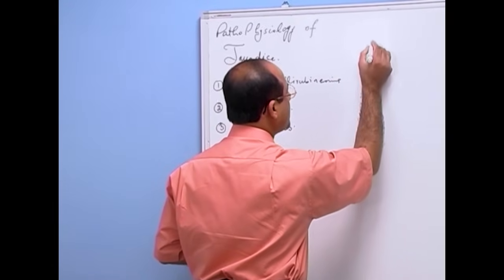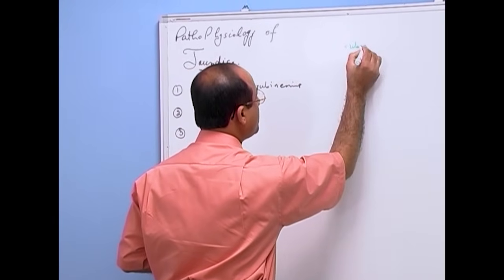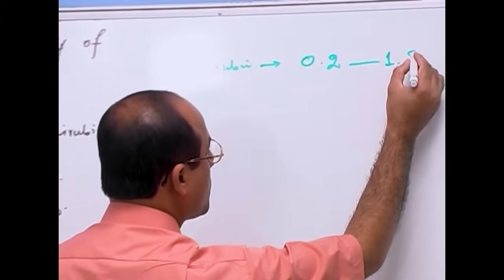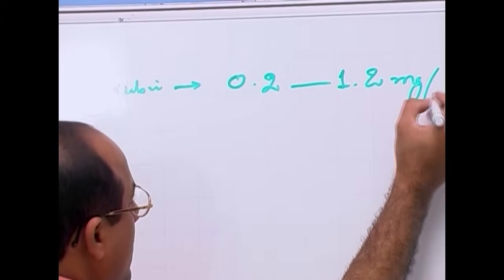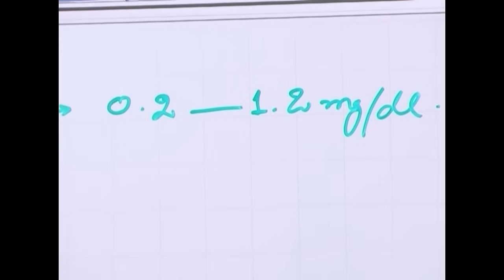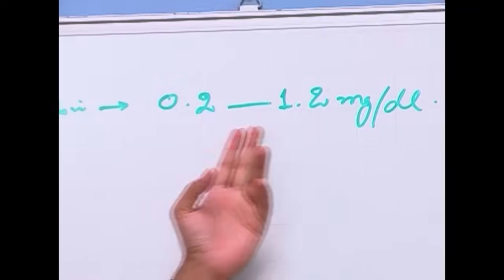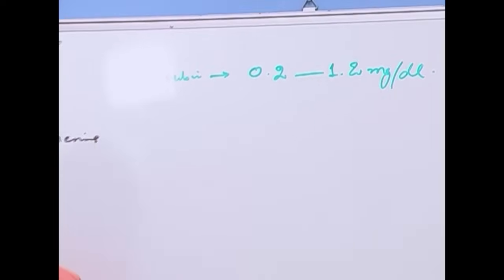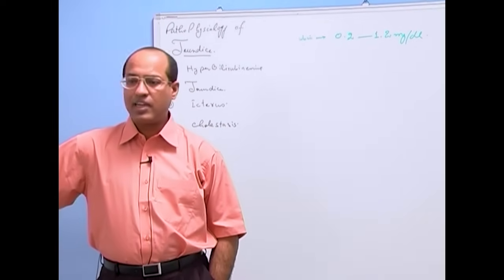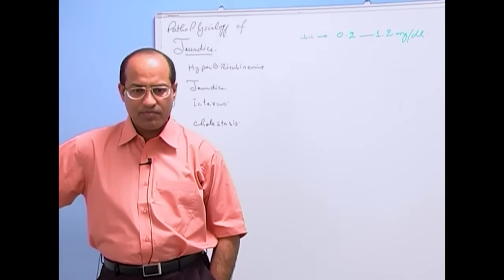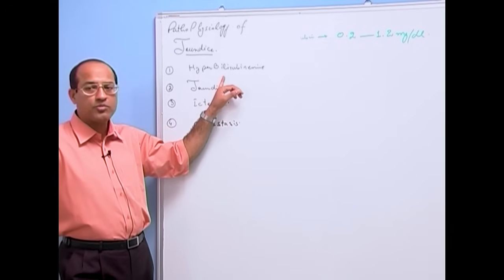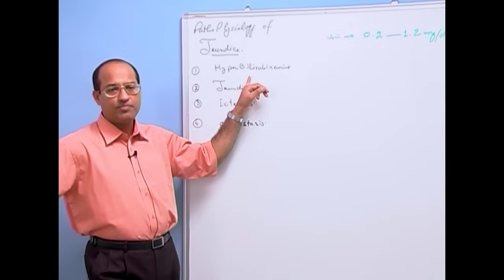The body should have a very efficient mechanism to get rid of bilirubin. But if bilirubin levels go above normal, you should first know what the normal level of bilirubin is. The normal level is 0.2 to 1.2 milligrams per dL — some people take it up to 1.6. If we say the normal level is 0.2 to 1.2 mg/dL and your level goes above that, we say there is hyperbilirubinemia. Hyperbilirubinemia means bilirubin level in the body is more than normal levels.